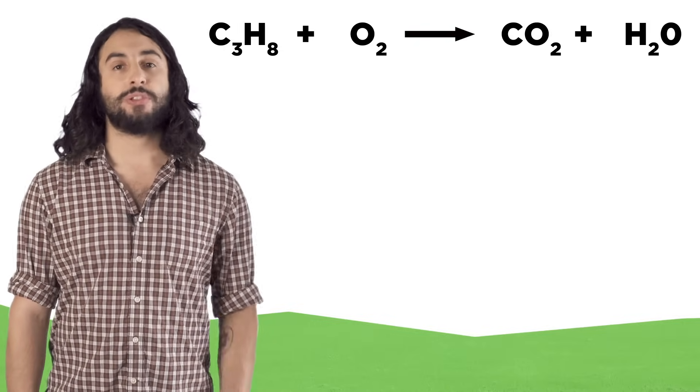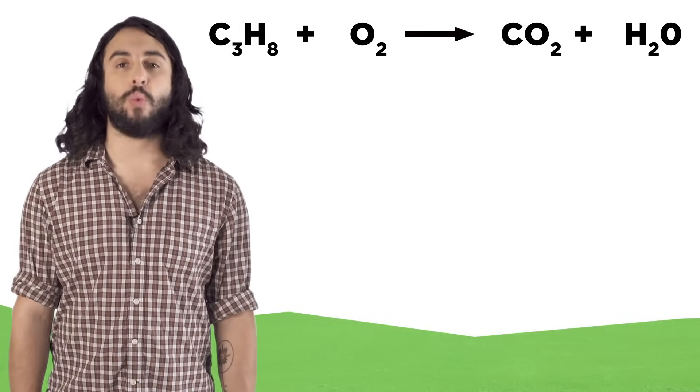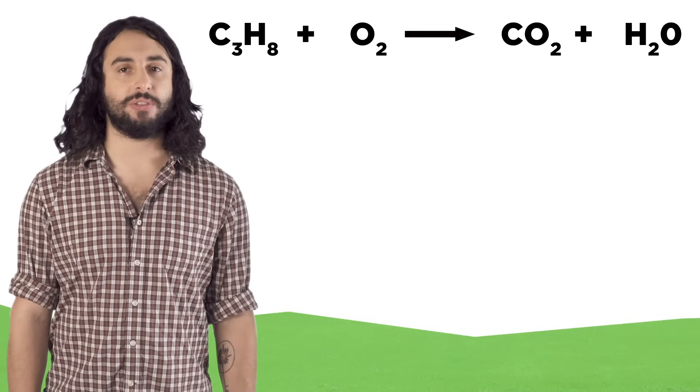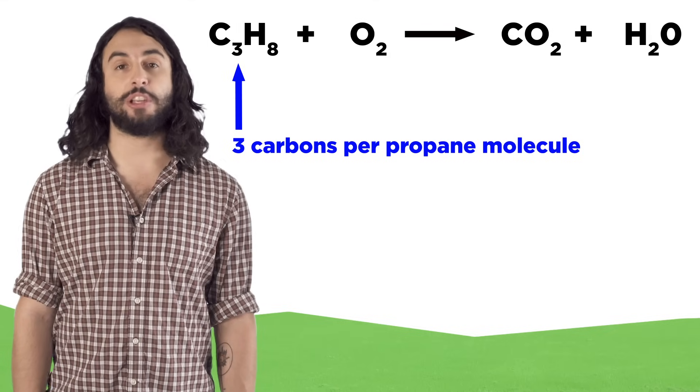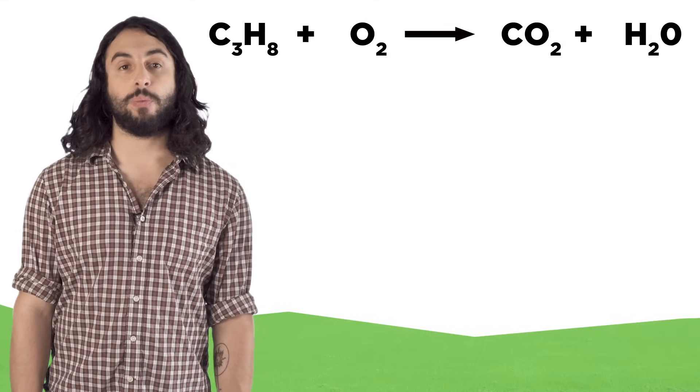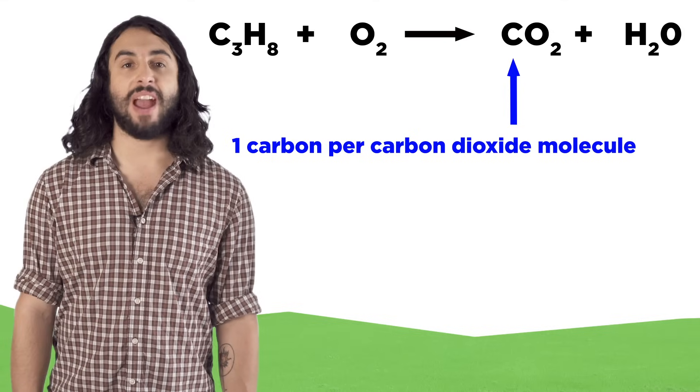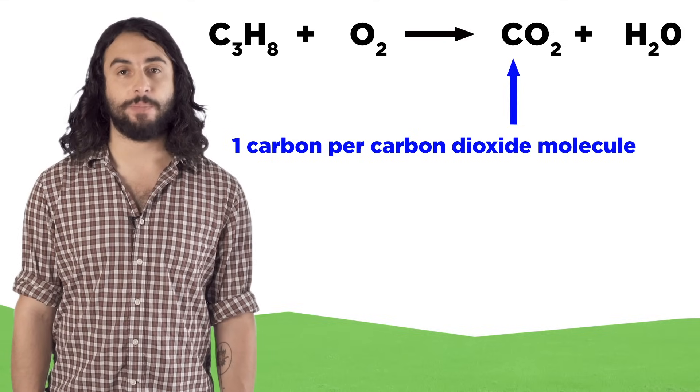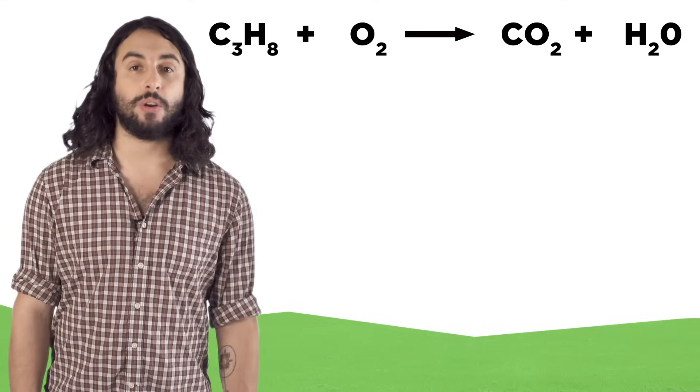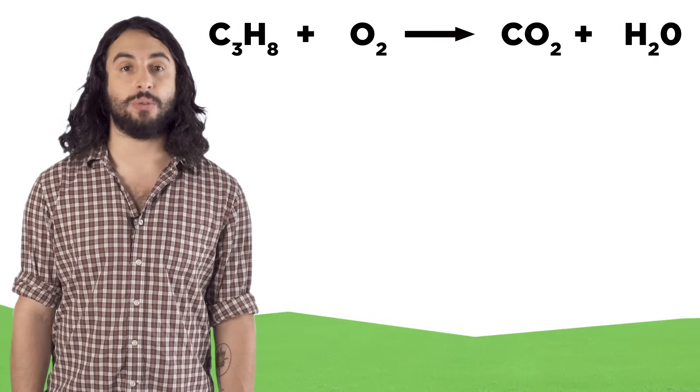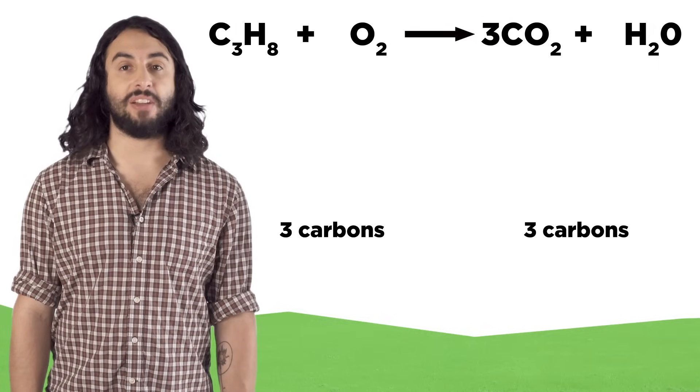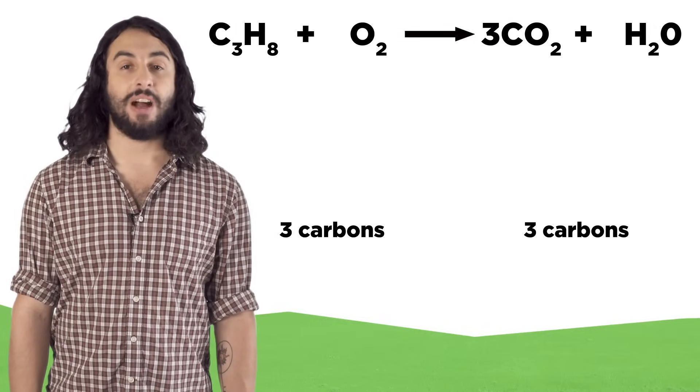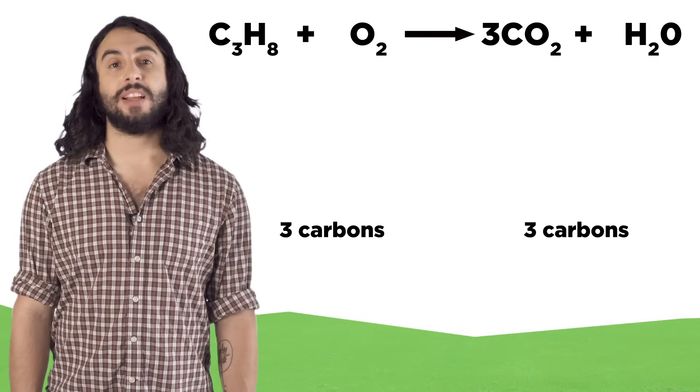Start with an element that is present in just one compound on each side. Let's do carbon first. On the left there are three carbon atoms for every molecule of propane, and on the right there is just one for every molecule of carbon dioxide. So according to the carbons, we are going to make three CO2s with every propane. Now the carbons are balanced, three carbon atoms on each side.